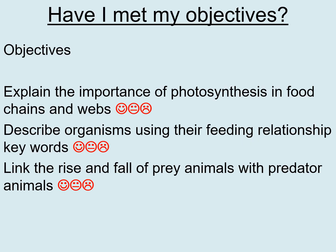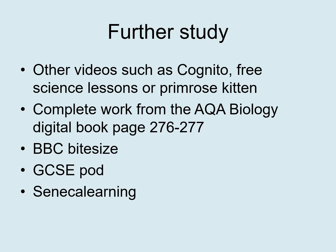Now think about whether you've met your objectives. Go back to where you wrote them and assess your confidence: can you explain the importance of photosynthesis in food chains and webs, describe organisms using feeding relationship keywords, and link the rise and fall of prey animals with predator animals? Draw a smiley, neutral, or sad face next to each objective to show how you're feeling about it.